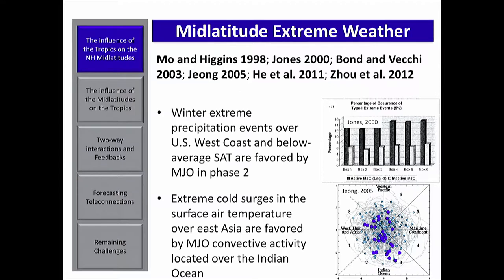Another example relates to the other side of the Pacific. Jiang in 2005 looked at extreme cold surges in surface air temperature over East Asia, plotting the distribution of these extreme events against MJO phases. When we look at the distribution of cold events, we see they tend to be favored by MJO convective activity located over the Indian Ocean.